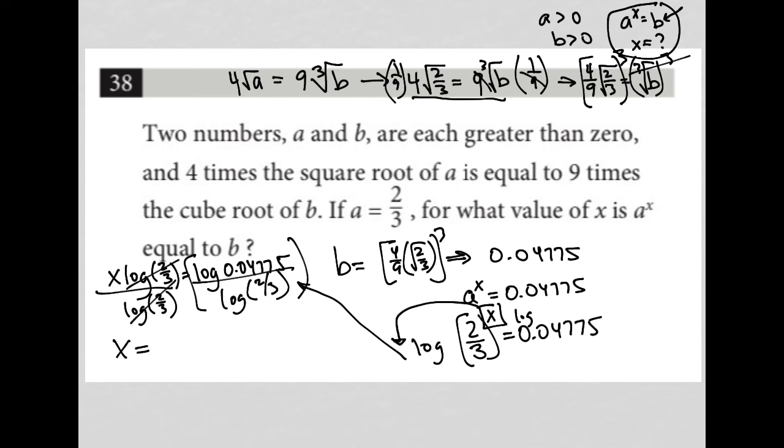So, the log of 0.04775, I'm getting negative 1.321027. And then the log of two-thirds, I am getting negative 0.176091. So, then when I divide these two things by each other, 1.321027 divided by 0.176091, I get 7.5. So, X is equal to 7.5. There is the answer.